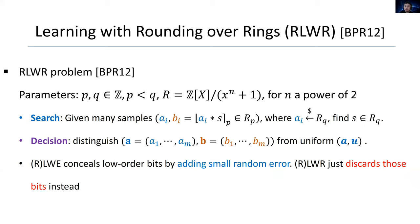Ring LWR is defined with parameters P, Q and the ring R. The search problem is to find the secret S from given samples as the pair (A,B), where A is a random element in R_Q, and B equals the rounding of A times S. The rounding of an element X with respect to P,Q is defined as the rounding of P over Q times X, then mod P.